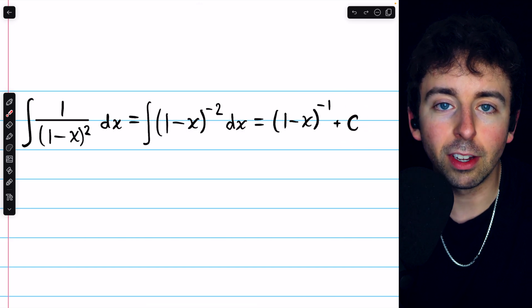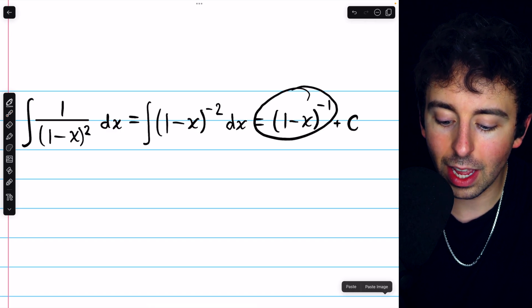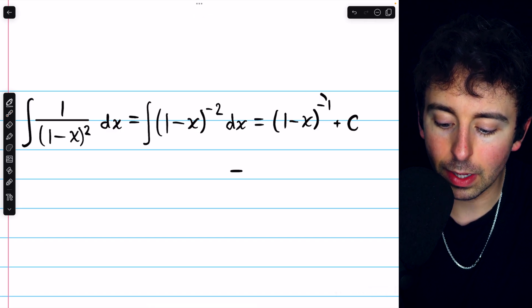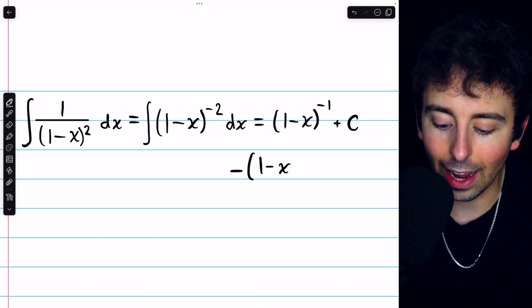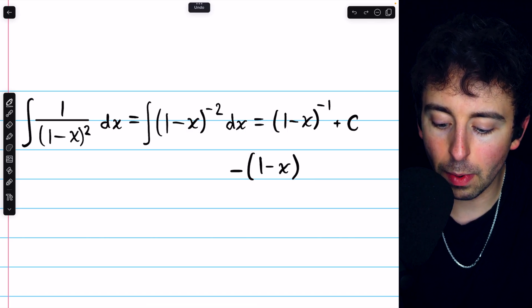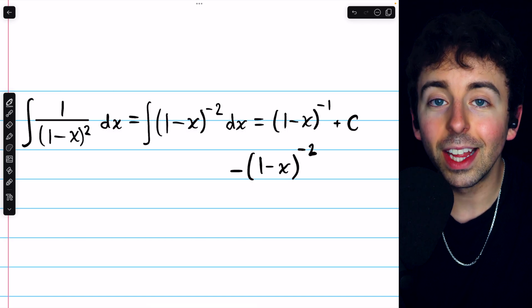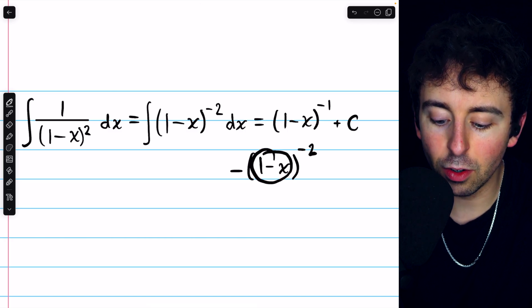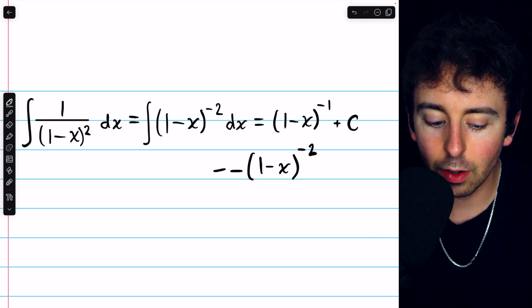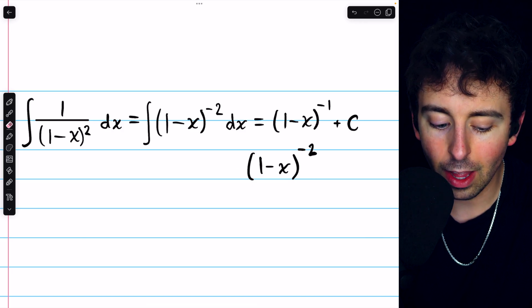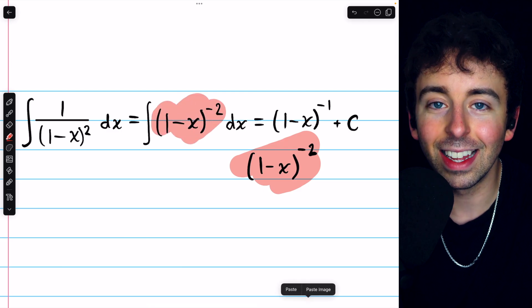The constant would just be 0 if we took the derivative. And then taking the derivative of this, we would have negative, because of that exponent, multiplied by 1 minus x, and then reduce the exponent by 1, so negative 2. And then by the chain rule, multiply by the derivative of that inside function, which is negative 1. So we'd have another negative factor. And those two negatives would cancel out, and we would have the correct answer.